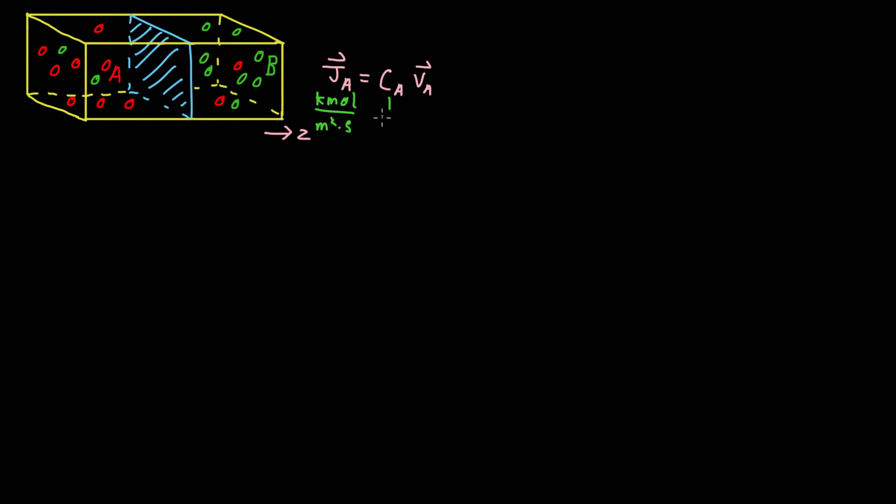This is the molar density, so this is kilomole per cubic meter. And here we have the velocity of species A in meters per second. The velocity of species A is simply the average velocity of all the atoms of species A in the direction, in this case the Z direction.